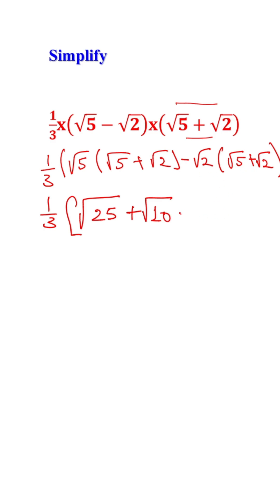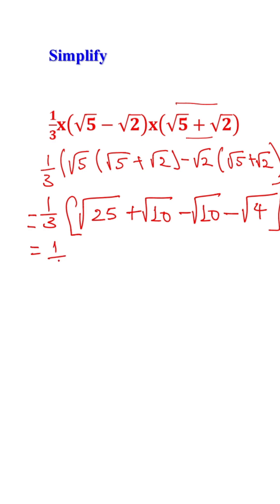Similarly, negative square root of 2 times square root of 5 gives minus the square root of 10; and negative square root of 2 times square root of 2 gives minus the square root of 4. So the next step: this equals one-third into square root of 25, which is 5.